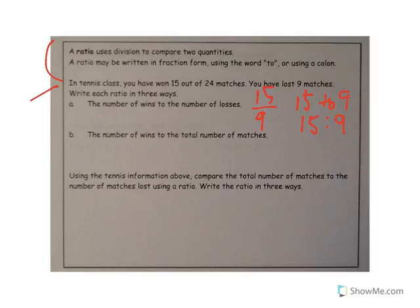And so if we look here at the number of wins to the number of total matches. Well, let's see. There are 24 matches total. So the number of wins, 15 to 24, 15 to 24, and then 15 colon 24. Those are all the same thing.